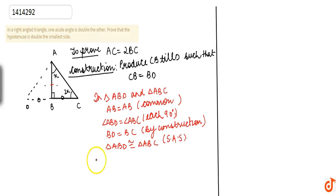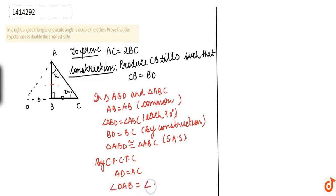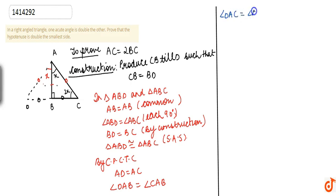By CPCTC, we can say that angle DAB is equal to angle CAB, which is equal to x. Therefore, angle DAC equals angle DAB plus angle CAB, which is x plus x, giving angle DAC equal to 2x.